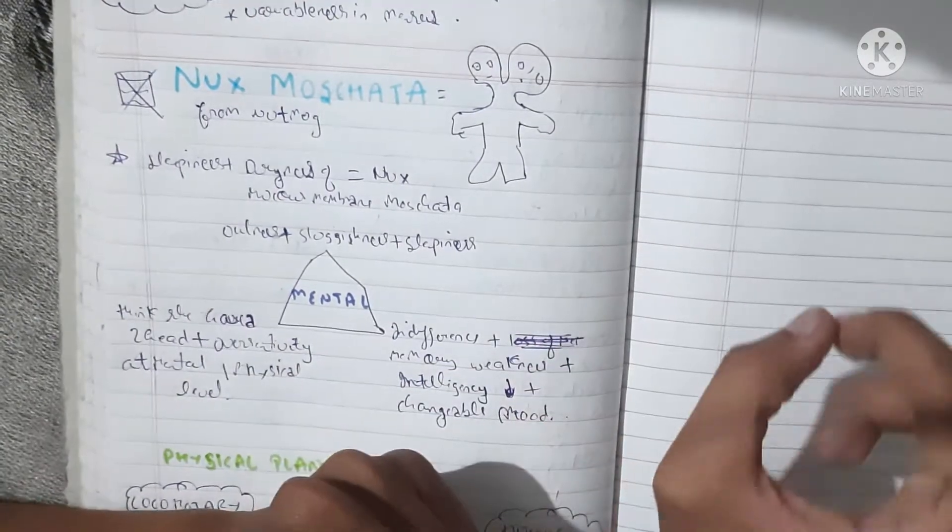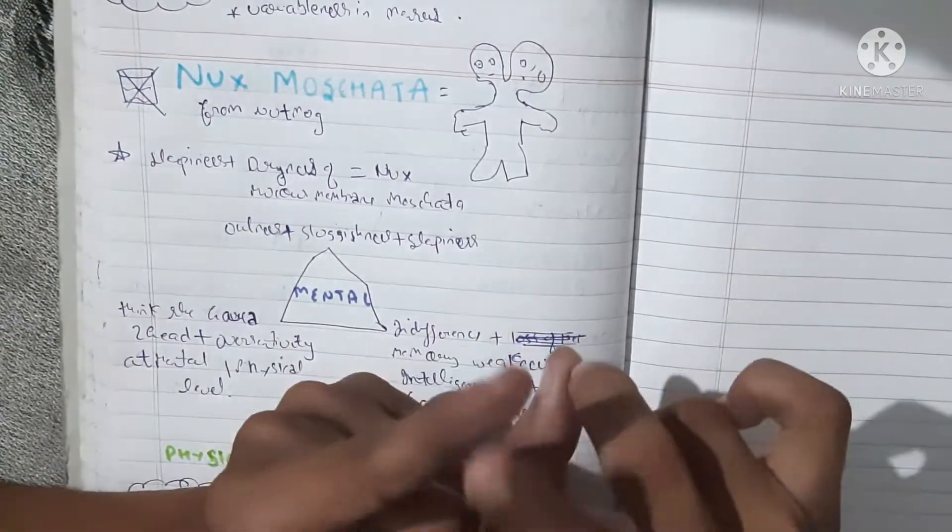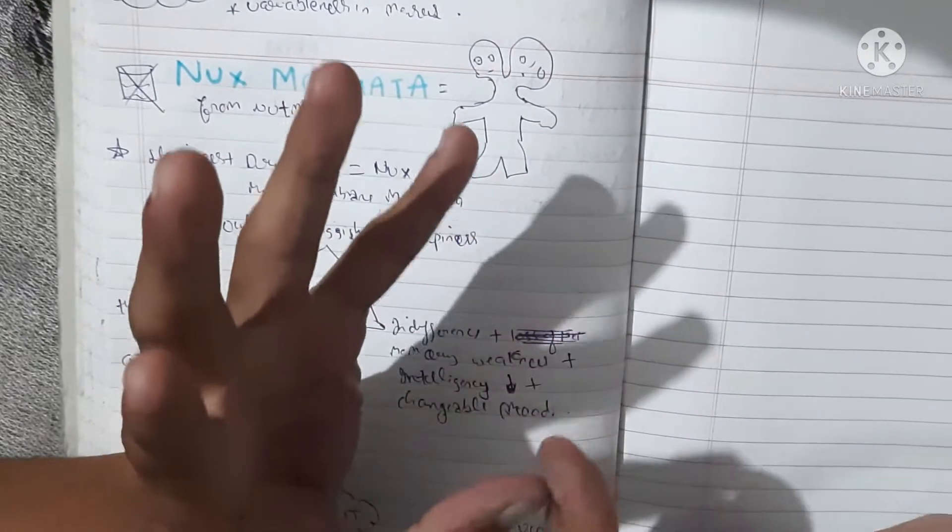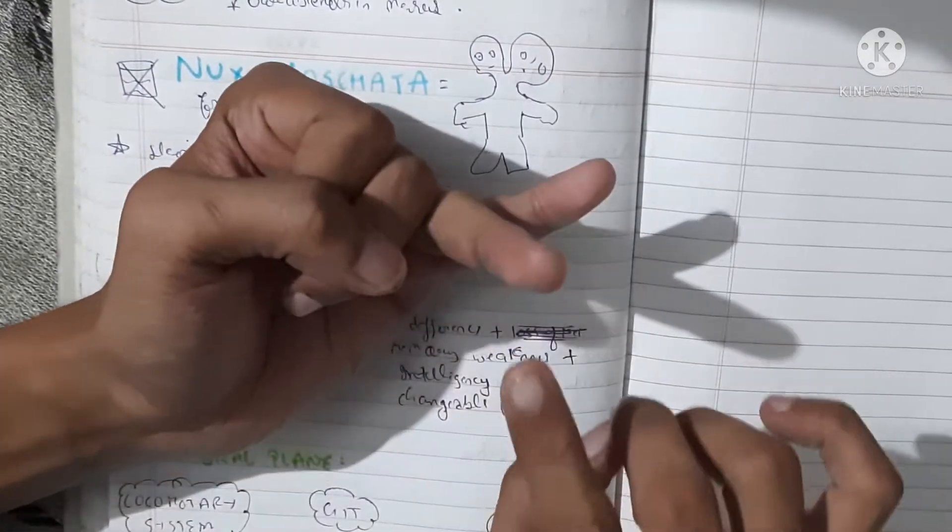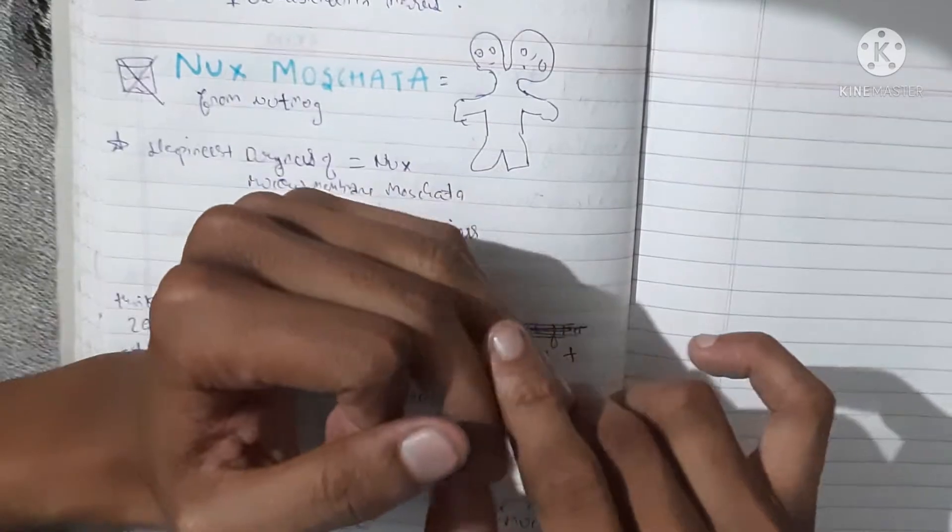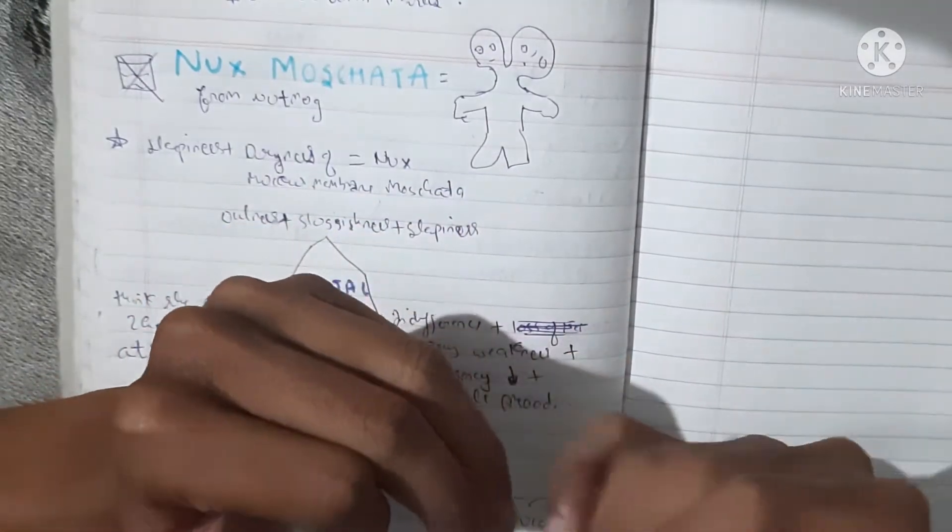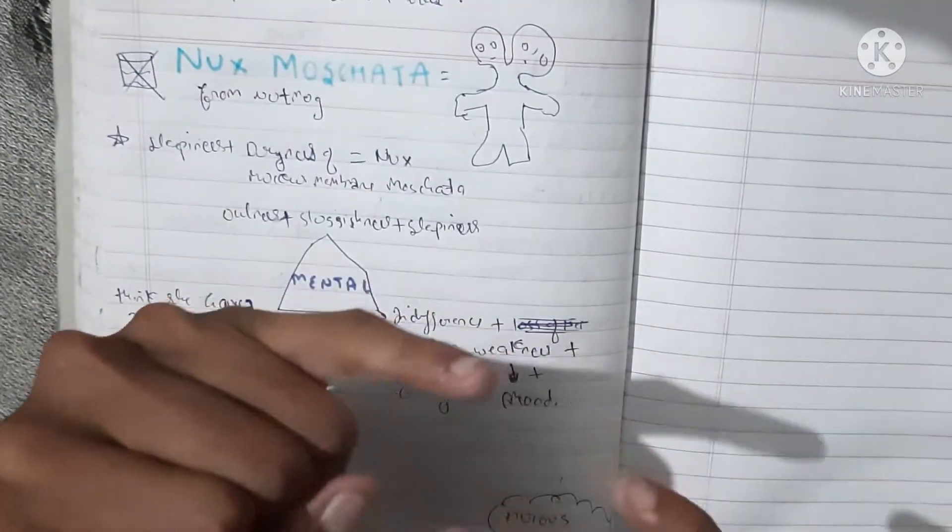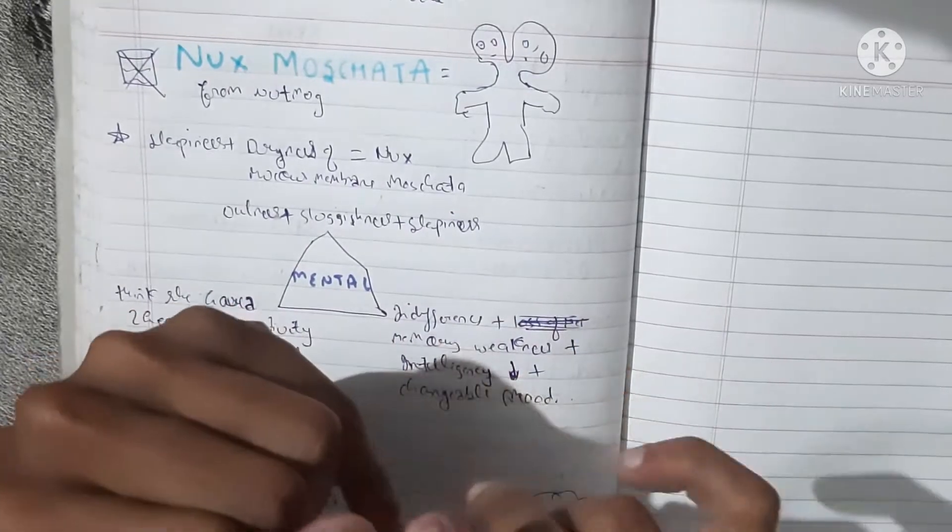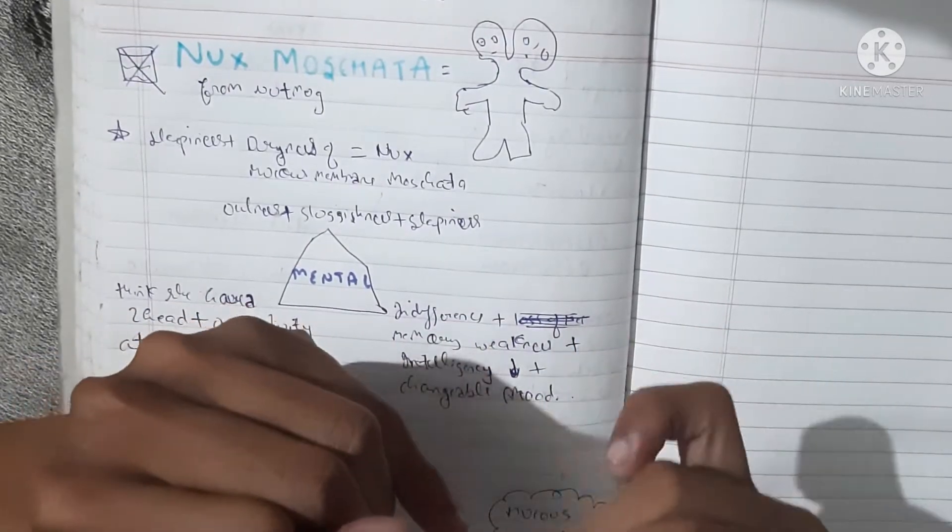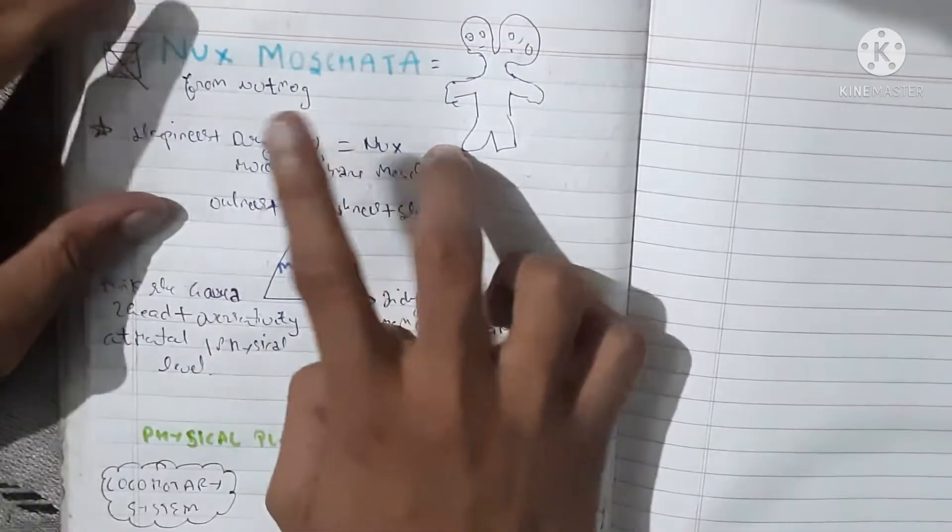If sleepiness with overall depression in the CNS and skeletal system and other things, then we will think about opium. And if this dryness is attendant with dryness of mucous membranes, then we will think about Nux Moschata.